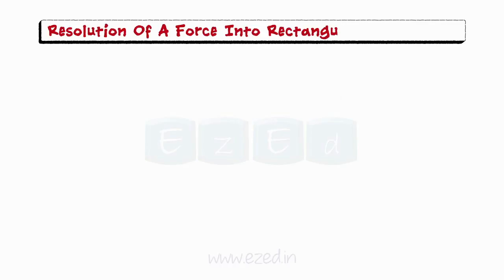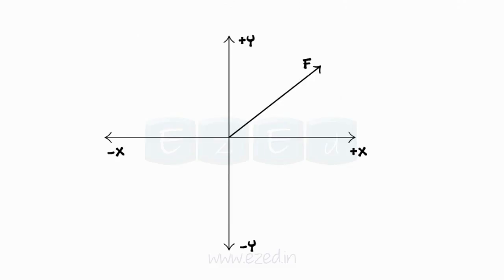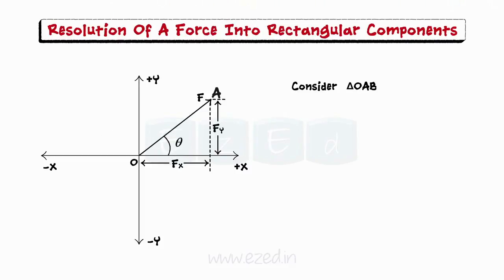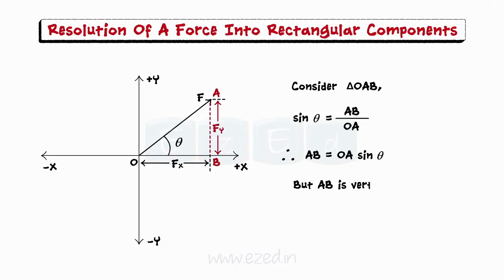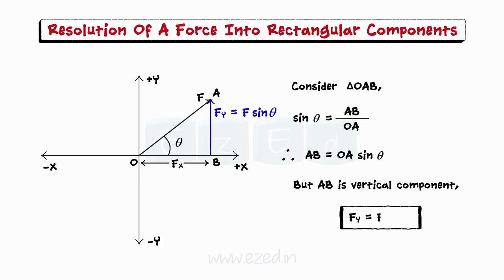We will now learn the method to resolve any force into rectangular components. Consider a force F acting at origin O, making an angle theta with the horizontal. This force can be resolved into components along the x-axis and y-axis. Considering triangle OAB: sine theta equals AB upon OA, therefore AB equals OA sine theta. But AB is the vertical component of force F. Therefore, the vertical component Fy equals F sine theta.